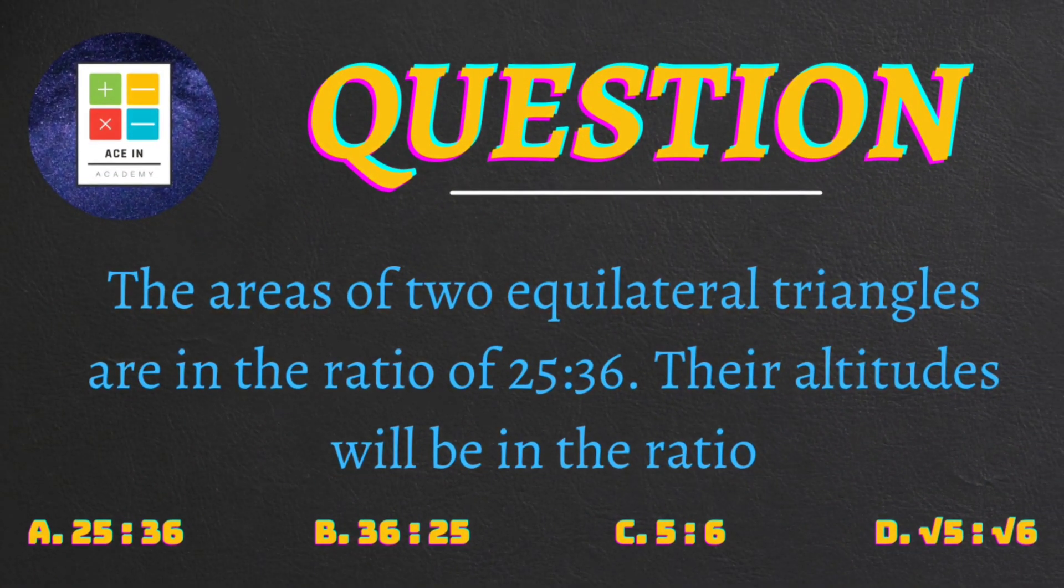The area of two equilateral triangles are in the ratio of 25 is to 36. Their altitudes will be in the ratio. Now we're provided with four options: 25 is to 36, 36 is to 25, 5 is to 6, and root 5 is to root 6.